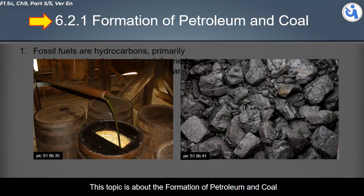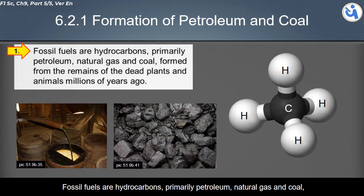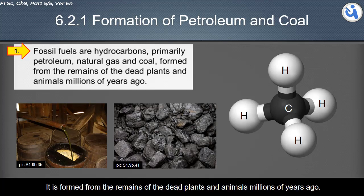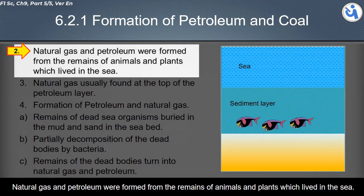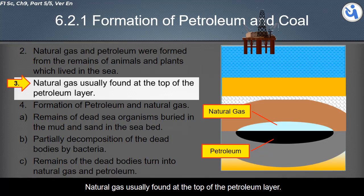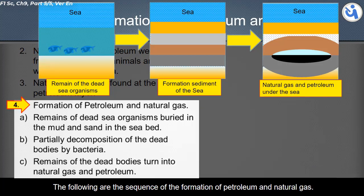This topic covers the formation of petroleum and coal. Fossil fuels are hydrocarbons — primarily petroleum, natural gas, and coal — formed from the remains of dead plants and animals millions of years ago. Natural gas and petroleum were formed from the remains of animals and plants which lived in the sea. Natural gas is usually found at the top of the petroleum layer. The following describes the sequence of formation of petroleum and natural gas.